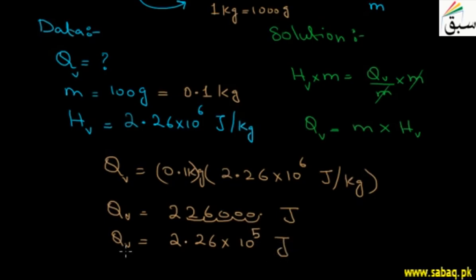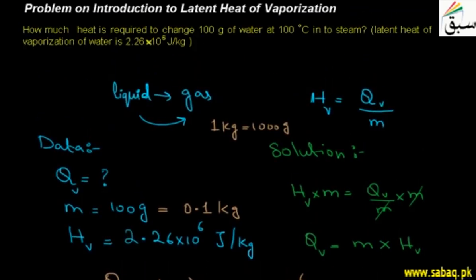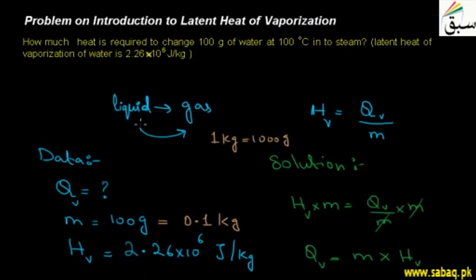So the amount of heat is 2.26 × 10^5 joules. When you provide this heat to 100 grams of water, you can convert it from liquid to gas state, and the temperature will remain 100°C.